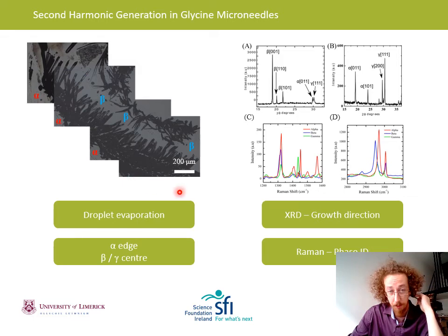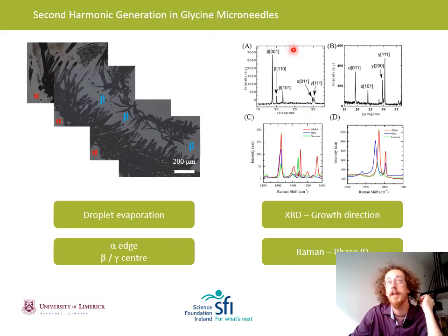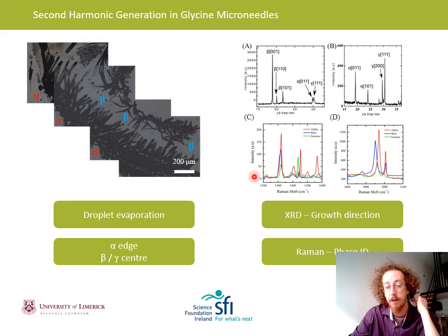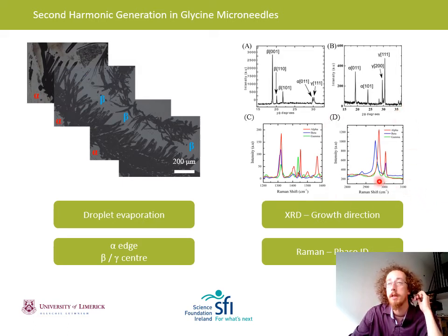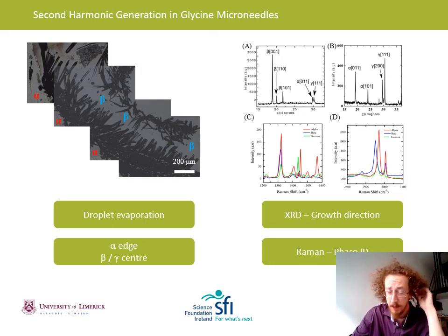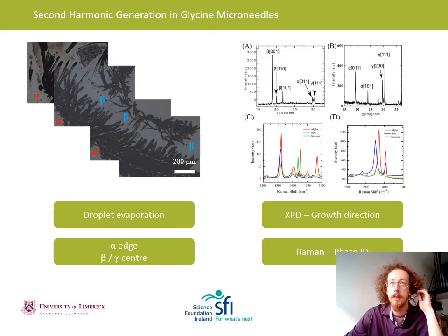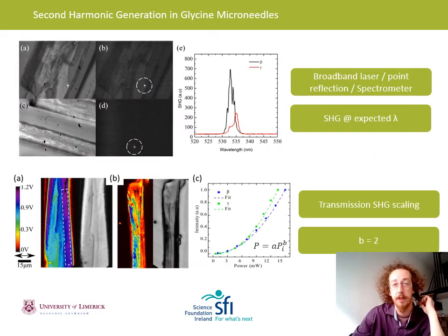With our sample grown, for modelling we need X-ray diffraction to find the growth direction of the crystals. For the beta sample it was [0, 0, 1] and for gamma around [1, 1, 1]. To confirm which phase of microneedle we're actually testing, we use Raman spectroscopy for phase ID — specifically the water vibration around 2950 wavenumbers to distinguish between alpha, beta, and gamma. Now that we have our microneedles, and we know their phase and crystal growth direction, we can start doing SHG measurements.